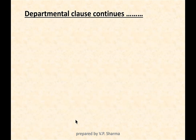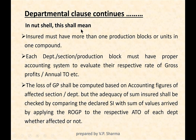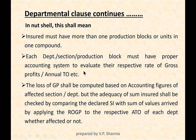To summarize the departmental clause: the insured must have more than one production block to get benefit of this clause. All blocks must be within one compound, and each department or section must have a proper accounting system to evaluate their respective rate of gross profit and turnover. Only if the insured maintains separate books of accounts for each department can this clause be applied.